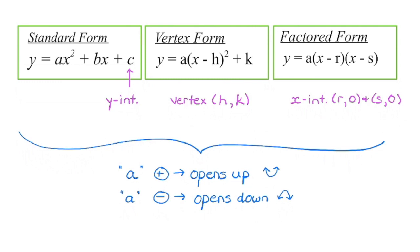If we have a negative a value, our parabola is opening down and we are going to have a maximum. That vertex is going to be either a minimum or a maximum depending on the direction of opening.